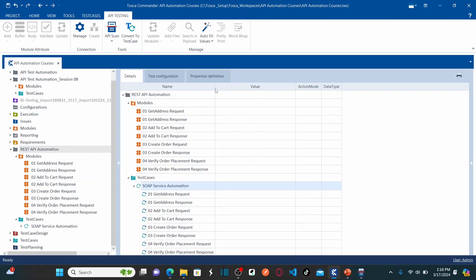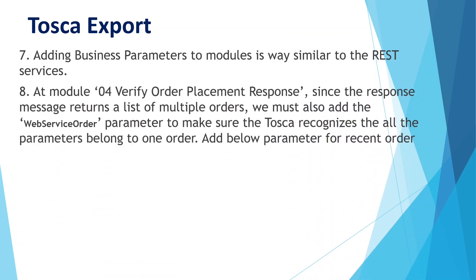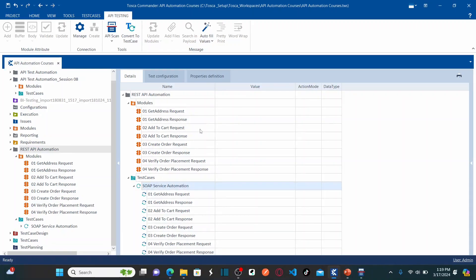Once that is done, we need to add business parameters to modules. Adding business parameters to modules is similar to what we did for REST services in previous lessons, around lessons 5, 6, and 7. The process will be similar for SOAP services. In this session, I'm going to add business parameters for one module only — specifically the Verify Order Placement Response module.